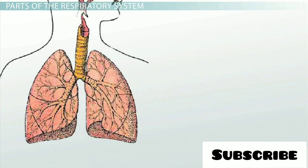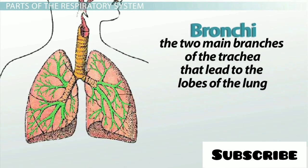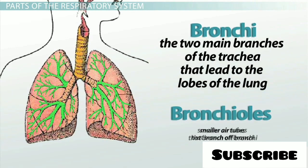Just as the air reaches the lungs, the trachea splits into two smaller tubes called bronchi. Each bronchus enters one side of the lungs and then splits repeatedly into ever smaller tubes called bronchioles.